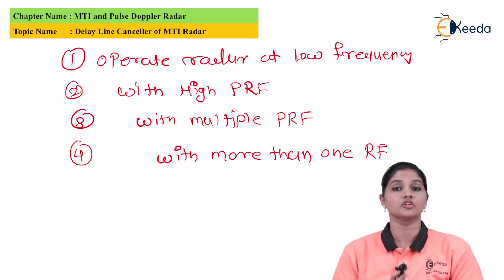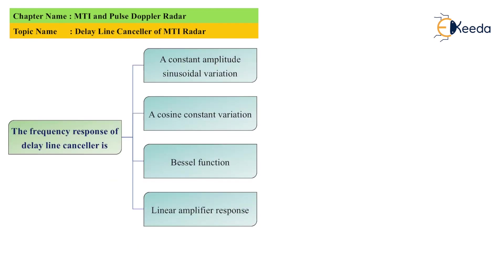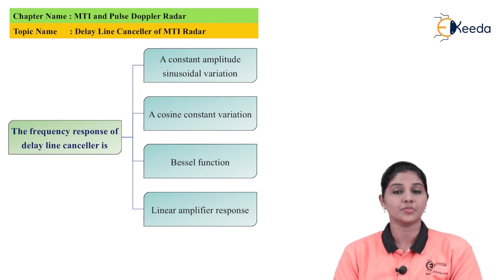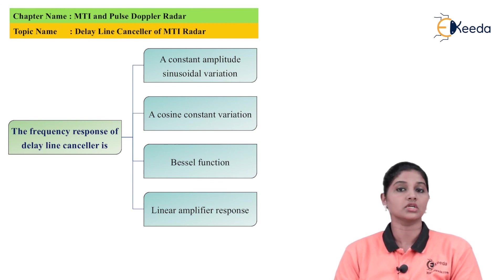This concludes the discussion of the delay line canceler and its function in MTI radar. For the MCQ review: the delay line canceler acts as a time domain filter (option C). The frequency response of the delay line canceler shows a sinusoidal variation — specifically a cosine variation (option B). These are key characteristics of the single delay line canceler in MTI radar systems.